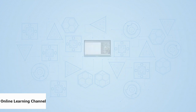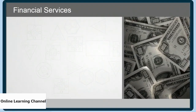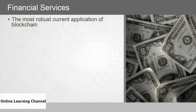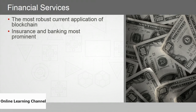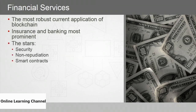Financial services is arguably the most robust current application of blockchain technology, with insurance and banking being the most prominent. This makes sense because banks and insurance companies rely on information, security, and transaction processing — the hallmarks of blockchain. The key applications that have drawn their attention are security, non-repudiation, and smart contracts. With blockchain, there are no middlemen, which reduces costs, and blockchain's secure and incorruptible nature makes it perfect for fraud mitigation.